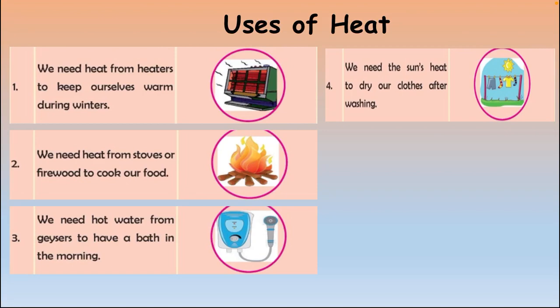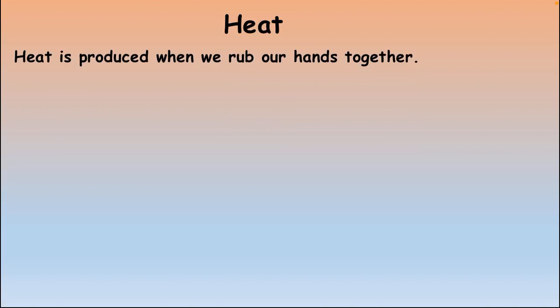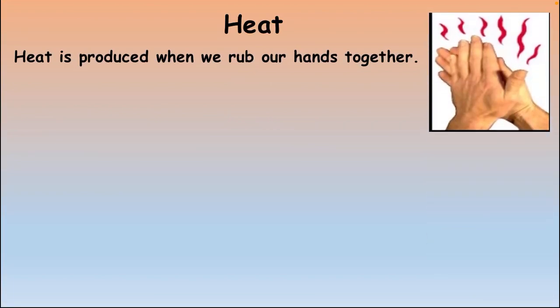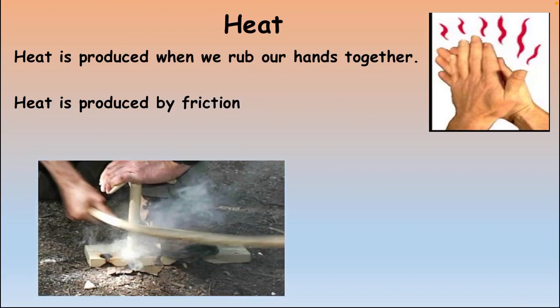We need hot water from geysers to have a bath in the morning. With the help of heat, the water gets hot and then we can take a bath — this is also a use of heat. We also need the sun's heat to dry our clothes after washing. We put our clothes outside, and the sunlight produces heat which dries our clothes.